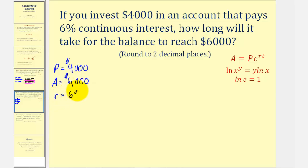As a decimal, that would be 0.06. And T is actually the unknown this time. So let's go ahead and set this up.